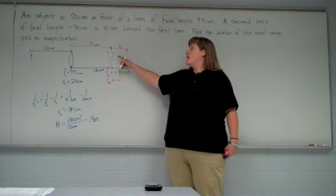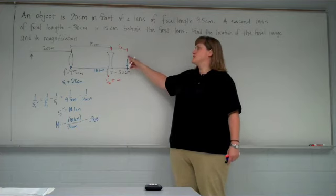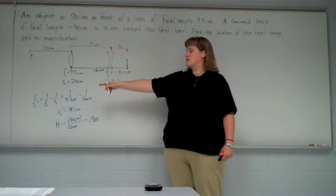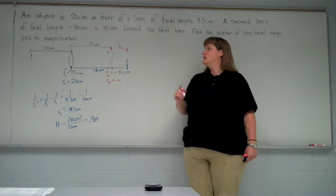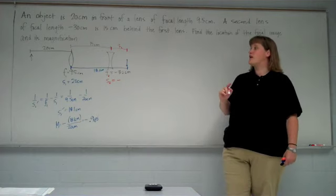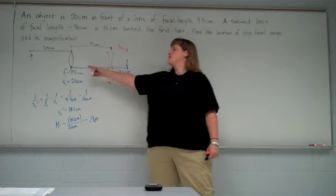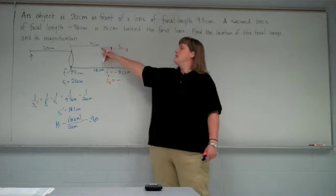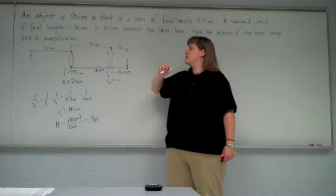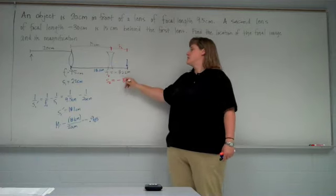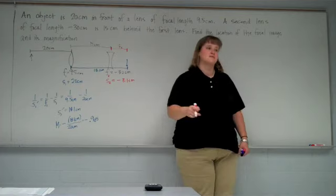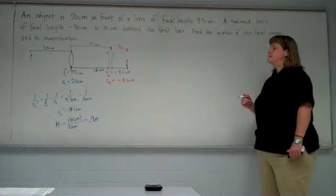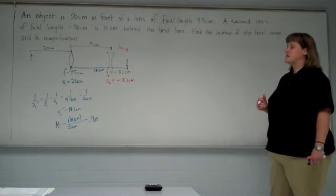Now we need to know how far this object, which was the image, we need to know how far it is from the lens. Because whenever we use our equations relating S, S prime, and F, all of those need to be measured from the lens you're working with. So if this total distance from the first lens to our image is 18.1 centimeters, and the distance between the lenses is 15 centimeters, the difference is 3.1 centimeters. So that is our object distance. Object distance is however far it is from the lens. Negative because it's on the back side of the lens.